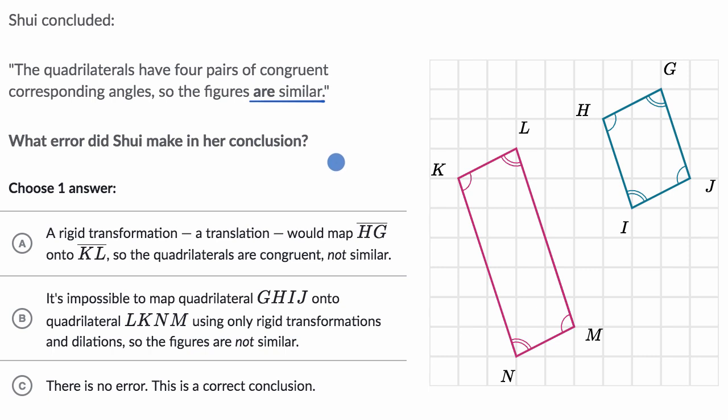All right, so let's just remind ourselves one definition of similarity that we often use in geometry class. Two figures are similar if you can, through a series of rigid transformations and dilations, map one figure onto the other.